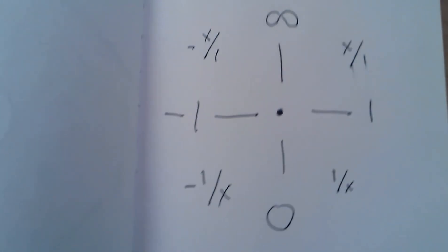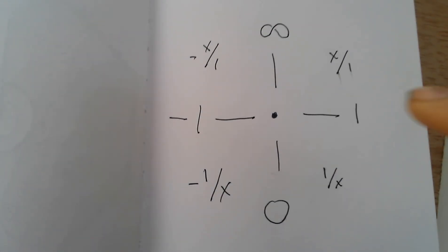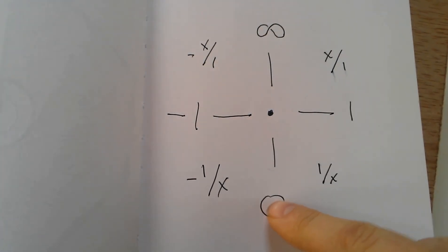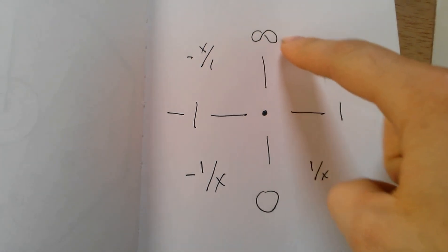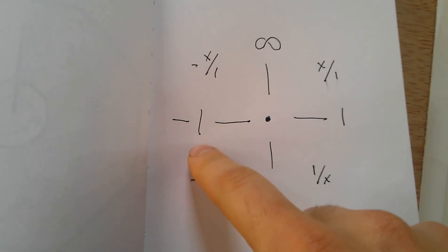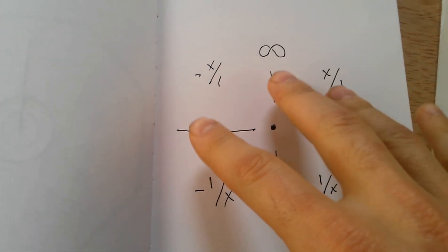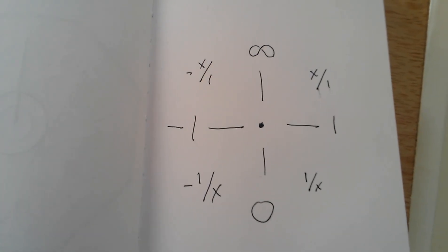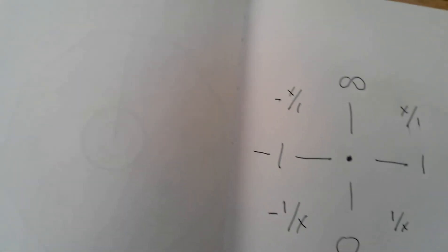Usually we're used to this spectrum right here — zero to infinity. But we also talk about negative one, the whole negative spectrum. There's a disassociation with it in terms of how we teach it.